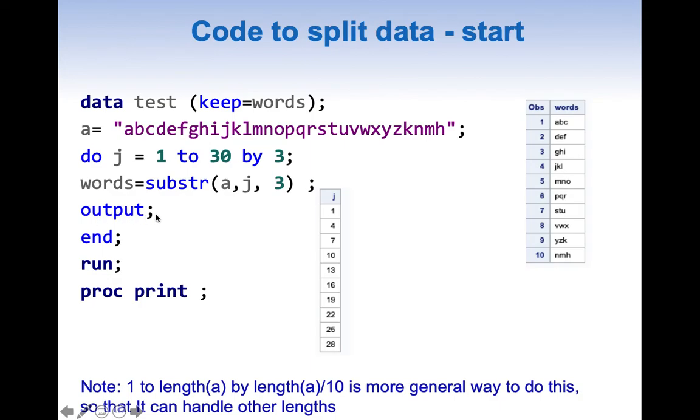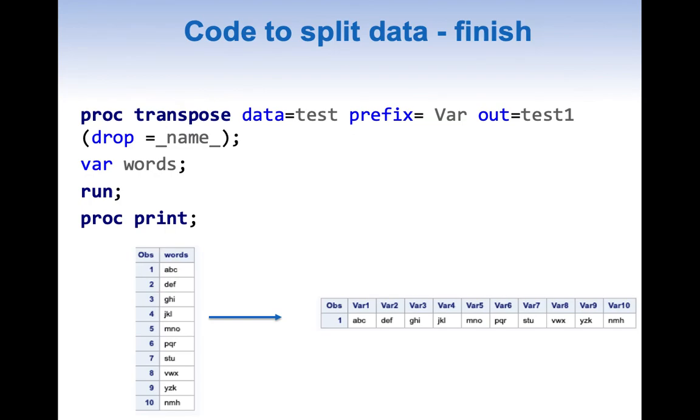I want you to note one important thing: 1 to length(a) by length(a)/10 is a more general way to do this, because it can handle any other scenario, even if your length is 2000 and you want 10 variables with 200 length. I also want you to focus on the results: we're creating a new variable called words with 10 observations.